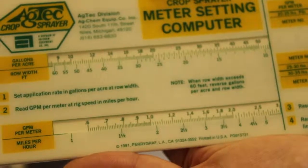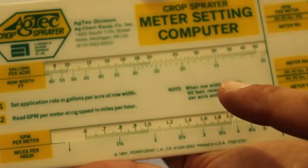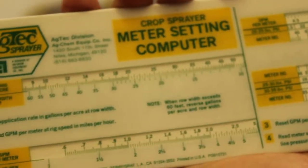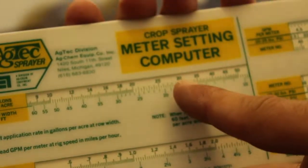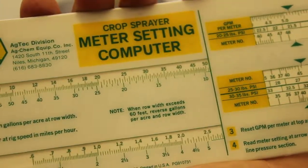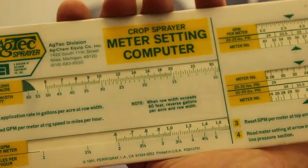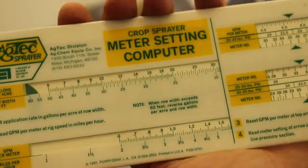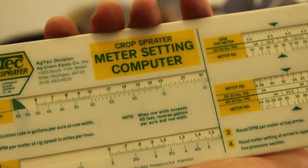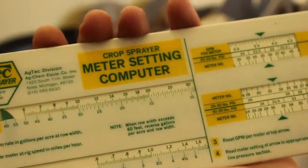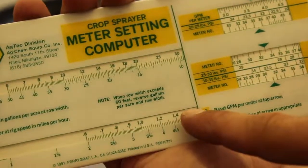Second, we need to know our row width. So let's say our rows are 10 feet. So we're doing 30 gallons per acre at a 10-foot row width. So we move 30 over 10. Now that gives us our gallons per minute per meter.